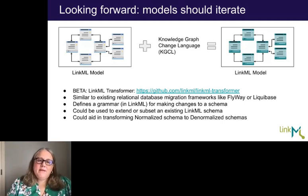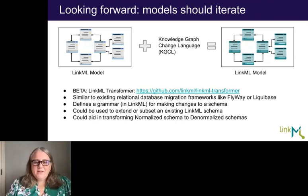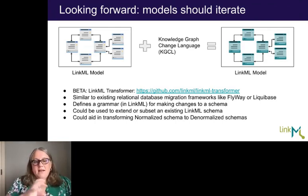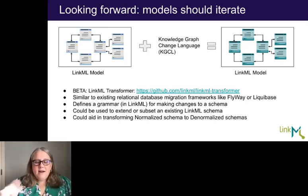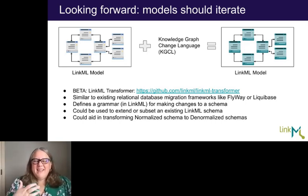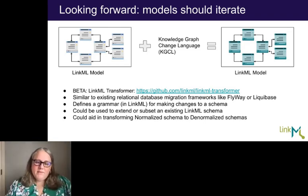The last lesson is that models need to iterate just like code. We shouldn't let perfection be the enemy of good. We need to put something out there, make sure we can interoperate with many systems, and then change it when biology changes. We have a tool called the LinkML Transformer that uses the knowledge graph change language to document the transform between an existing model and an evolved model — similar to relational database tools like Flyway or Liquibase.